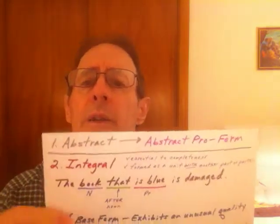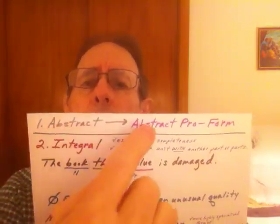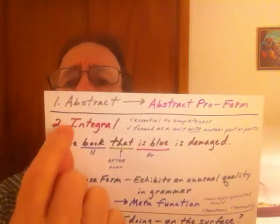In other words, basically on the surface level — on the level at which we leave it right where it is in the sentence and look at it right where it is, and take it at face value. So in the first part of our analysis we got our abstract proform, now we're on the second level: integral. Integral means essential to completeness, or formed as a unit with another part or parts.